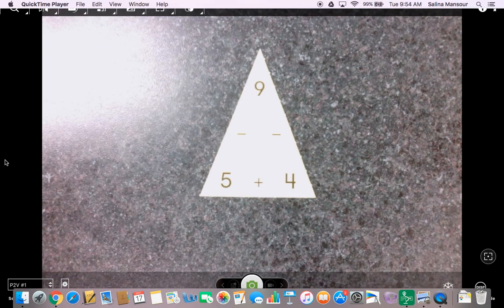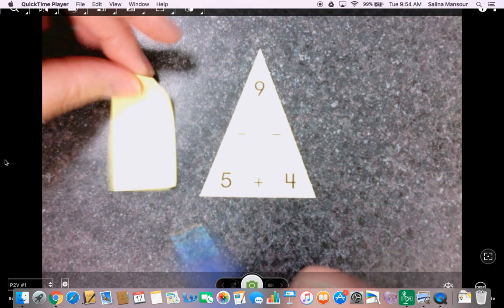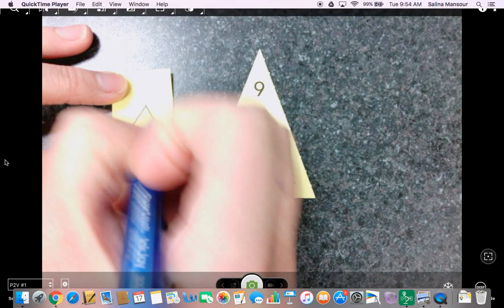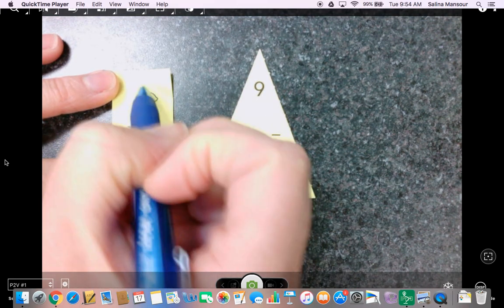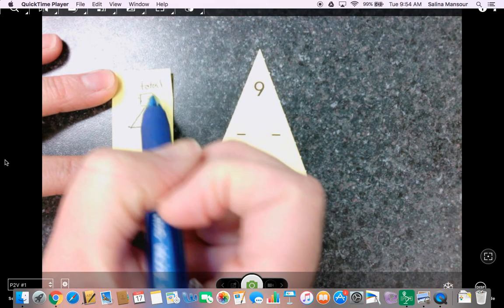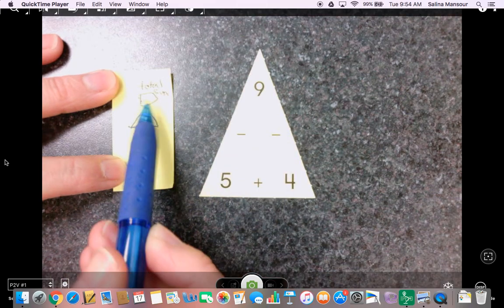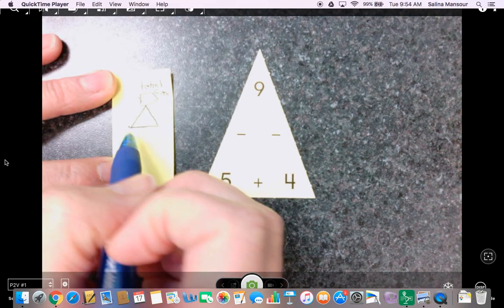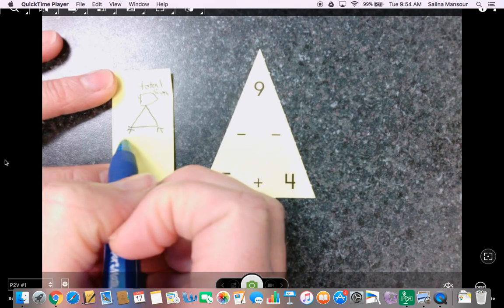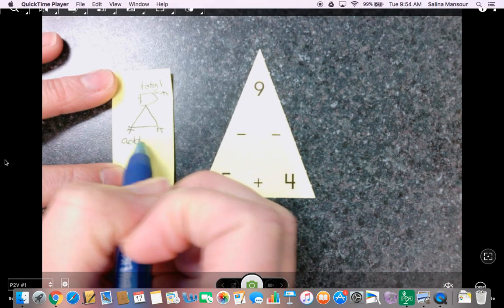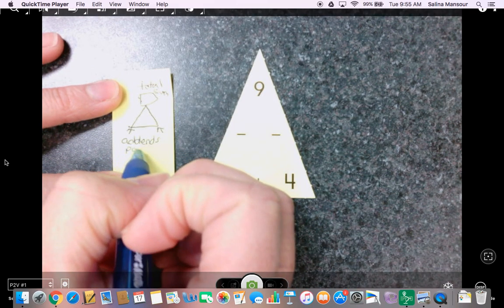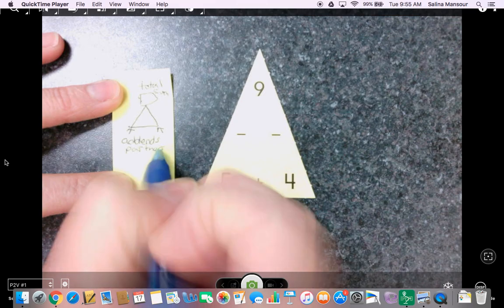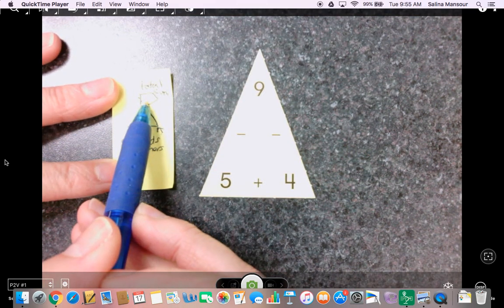Just to sort of review the language with you that the children are using in our Math Mountain or our Fact Triangle. We're referring to this number at the top as the total. It's also good to make them familiar with the language of the sum. And then the two numbers that are here, those are called the add-ons because those are the two numbers that they're adding together. But your children might also call them the partners, meaning that those two numbers are the partners that work together to give you this total.